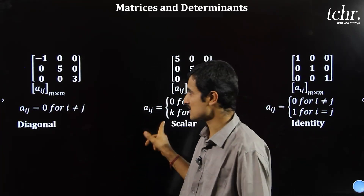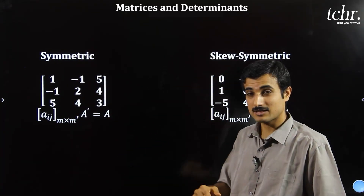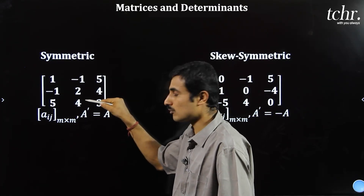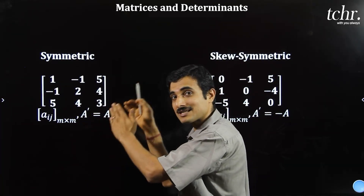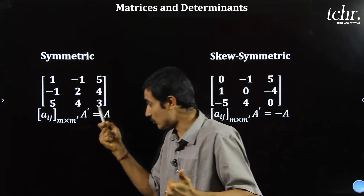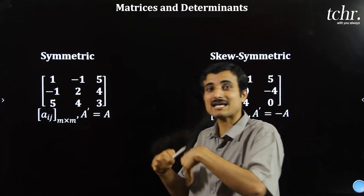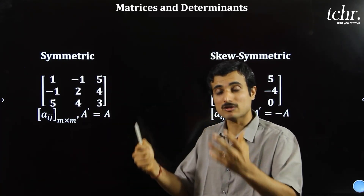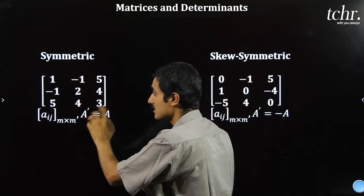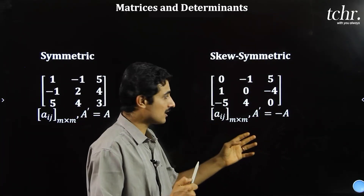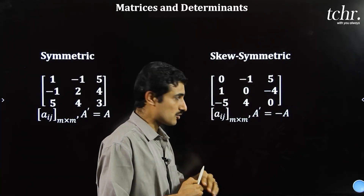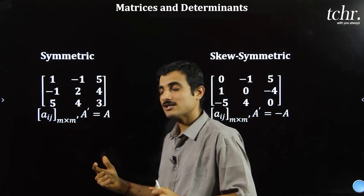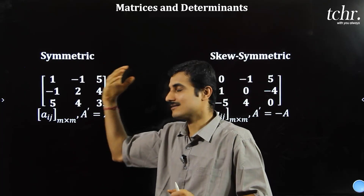Types of matrices also include symmetric and skew-symmetric — must know, definitely one CET question comes. Symmetric matrix: if you take a matrix and write rows as columns (transpose), and we get back the original matrix, we call it the transpose. If transpose of A equals A, it is symmetric. If transpose of A equals minus A, it is skew-symmetric matrix.